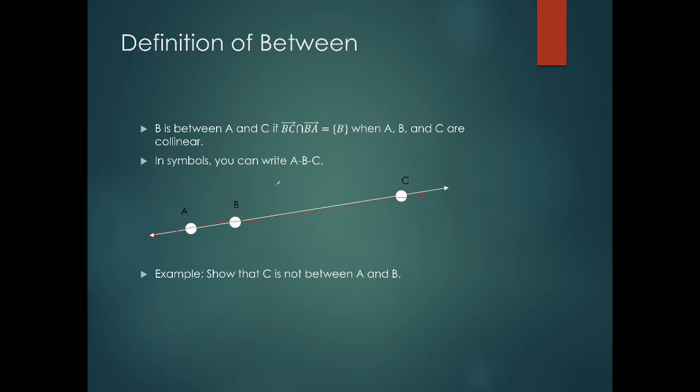Some might think if we had a point here, let's call it E, that point E is between B and C. In our regular English language it kind of looks like it's between B and C, but it is not because it's not collinear.